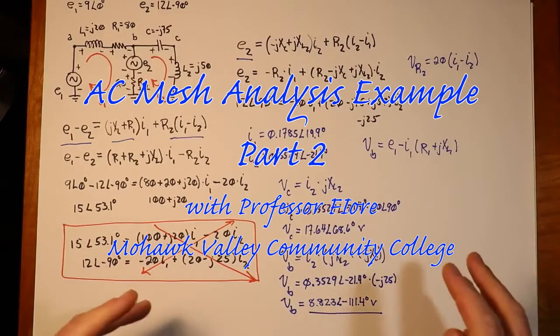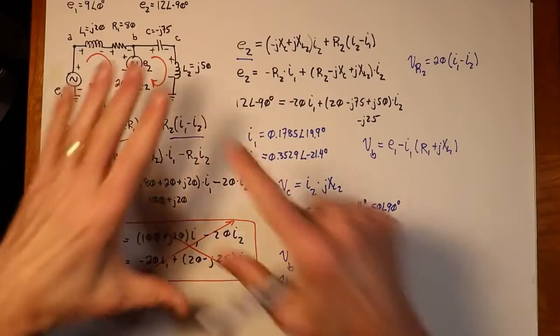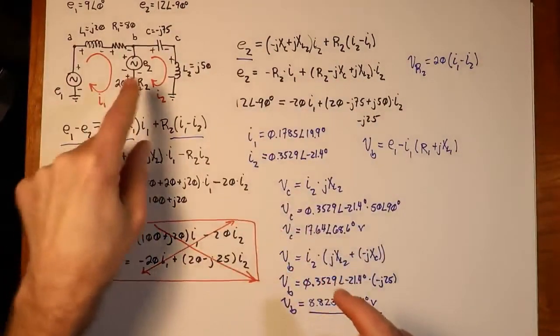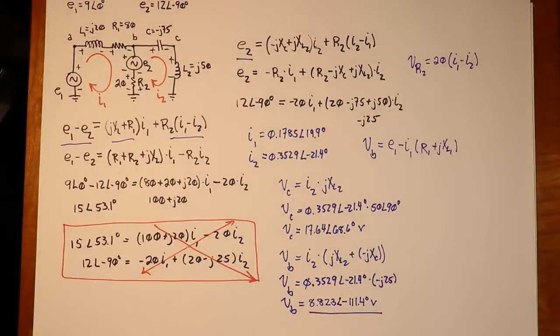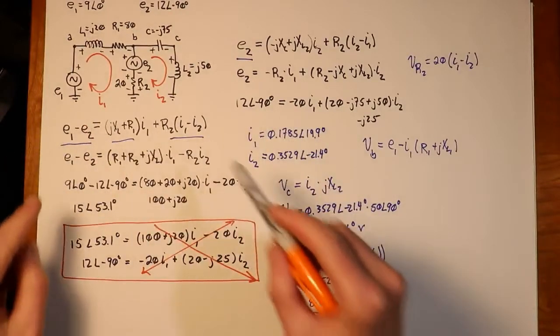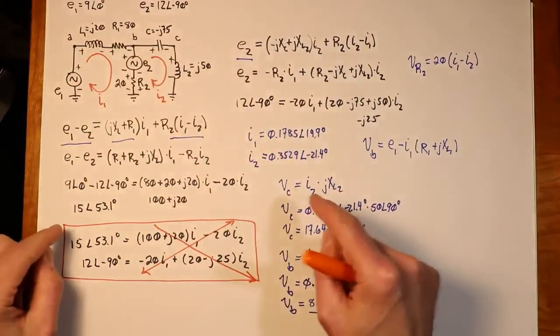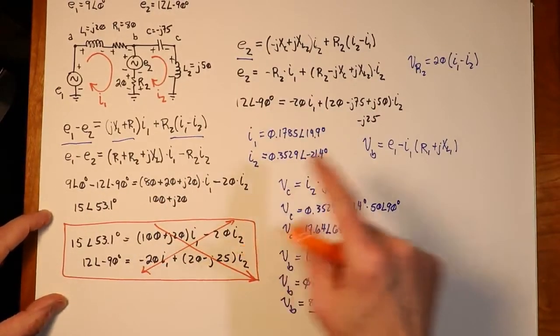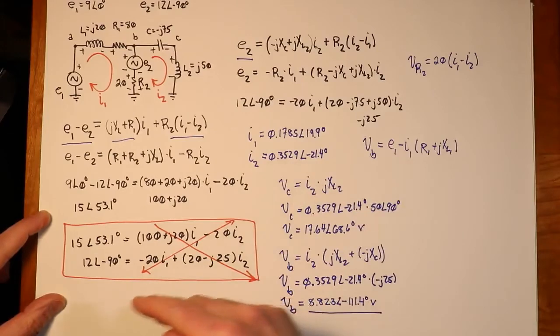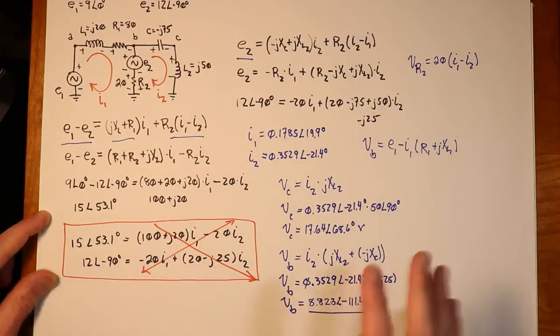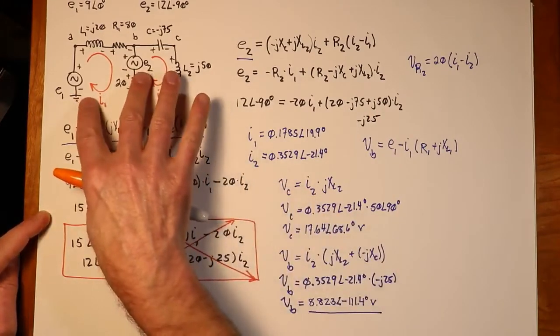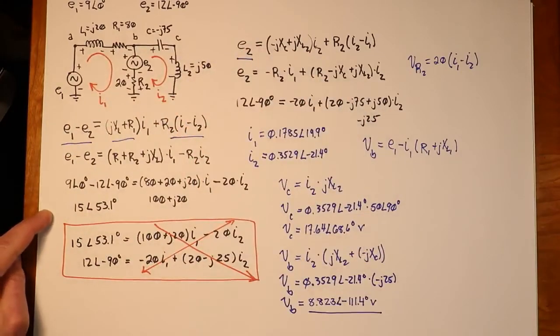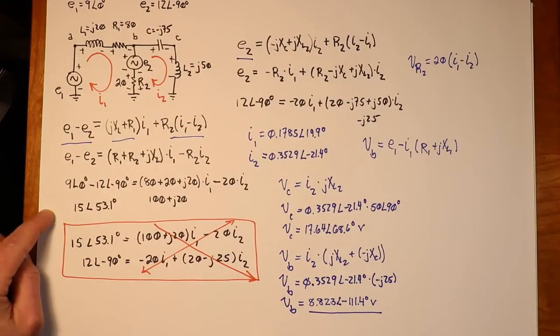Alright, picking up where we left off with our mesh analysis example. This is where we were. Here was our circuit, a couple of sources, various RLC components, and we had gone through a basic KVL summation on each of these loops and eventually derived some equations. The pair was down here. So that was the general approach, and it'll work fine with a mixture of voltage sources and current sources.